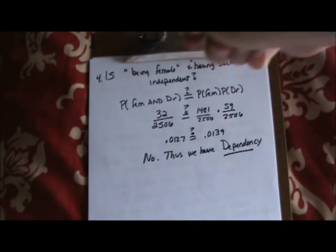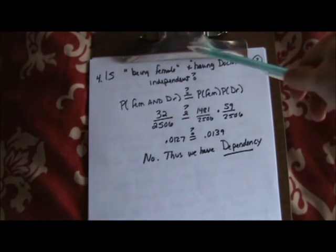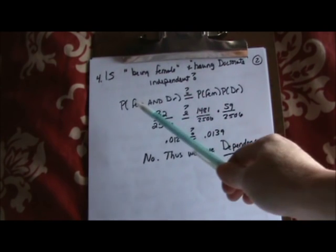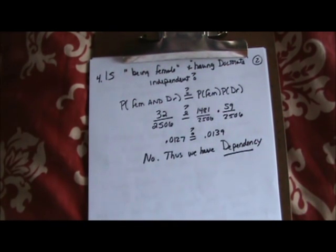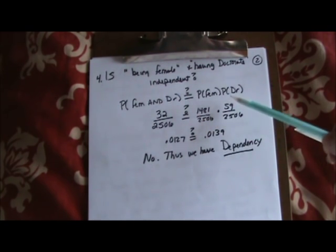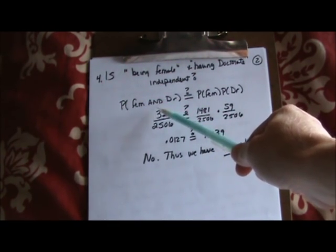Number four asks about two of the categorical variable values and whether they're independent — not generically 'is gender and degree independent?' but specifically: is being female and having your doctorate independent? Using the multiplication rule, I try to use words: probability of female AND doctorate — we're testing if it equals probability of female times probability of doctorate. The probability of female we did in part one, and for doctorate you look at the bottom of the chart under doctorate: 59 over the grand total.